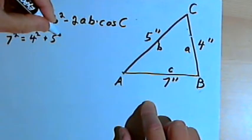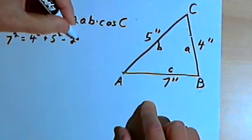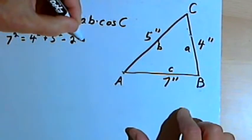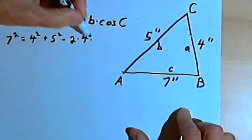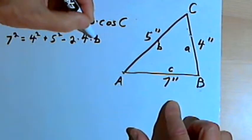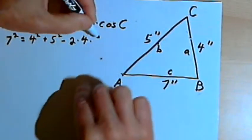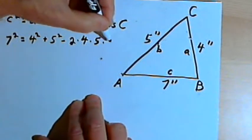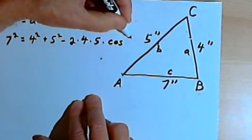Minus 2 times a, which is 4, times b, which is 5, times the cosine of c.